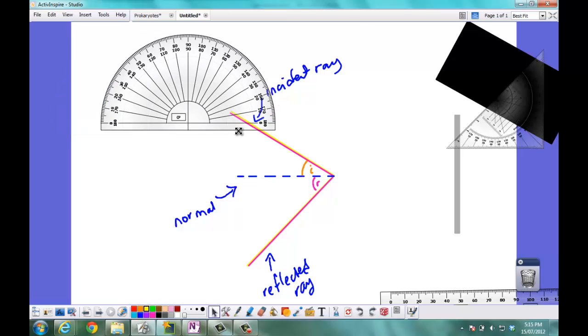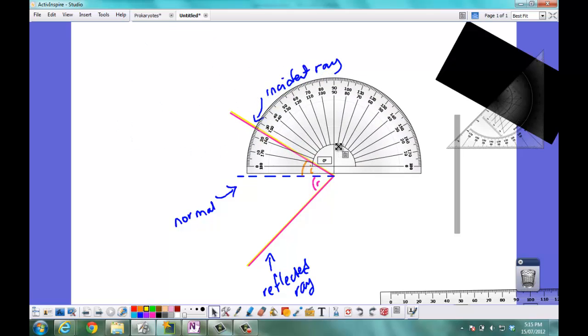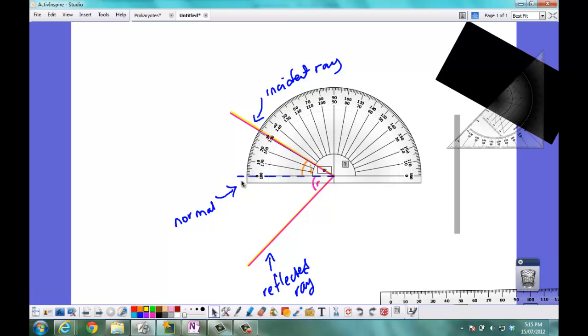The last step now is to actually measure these angles so I need to line up my protractor exactly. We've got the zero lining up with one edge of the angle. We've got the midpoint of the protractor lining up exactly with the corner of the angle. And you can see that in this case the angle of incidence measures 30 degrees.